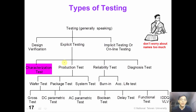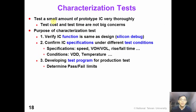We have finished the production test section. Now we move on to the characterization test. Characterization test means that we test a small amount of prototype ICs very thoroughly. Because the number of ICs tested is very small, test time and test cost are not a big concern for characterization test — this is opposite to production test.